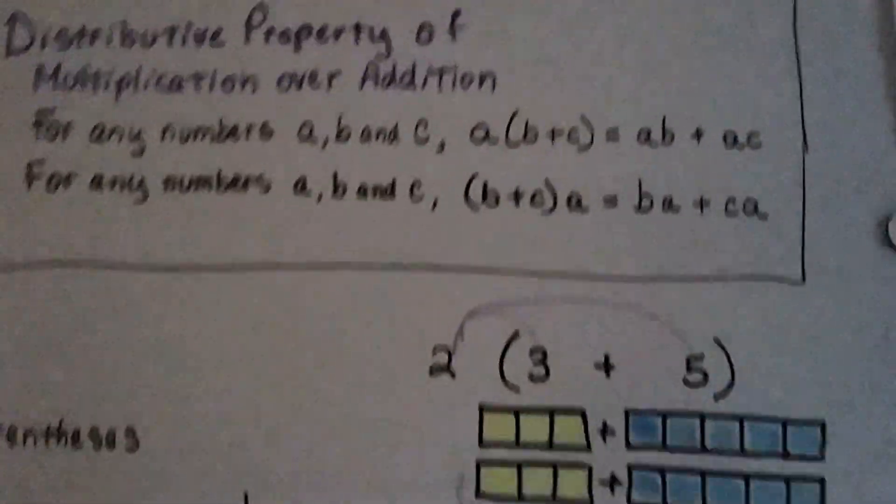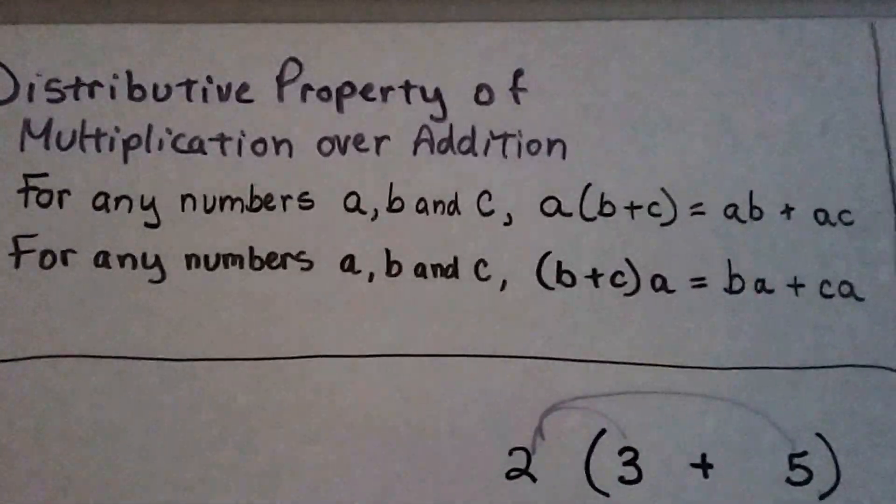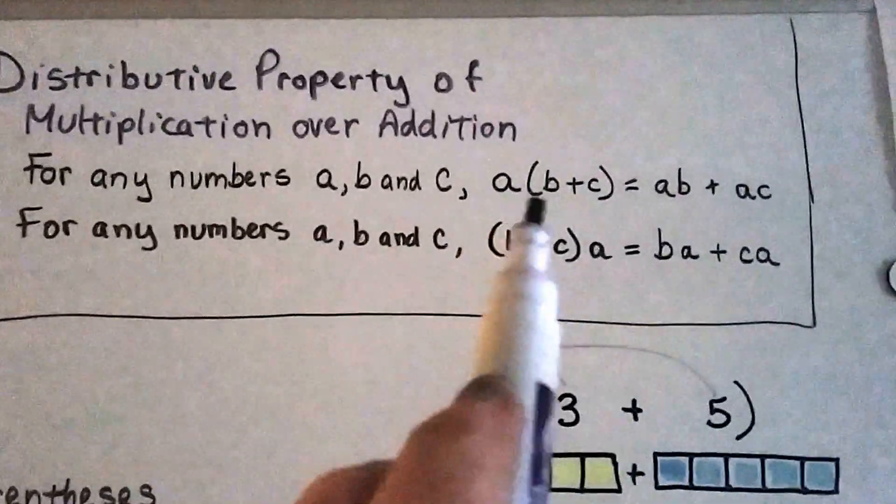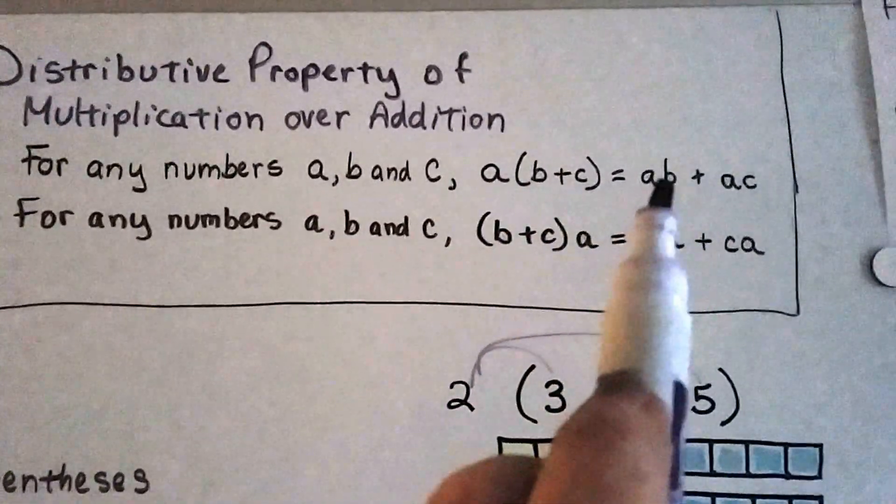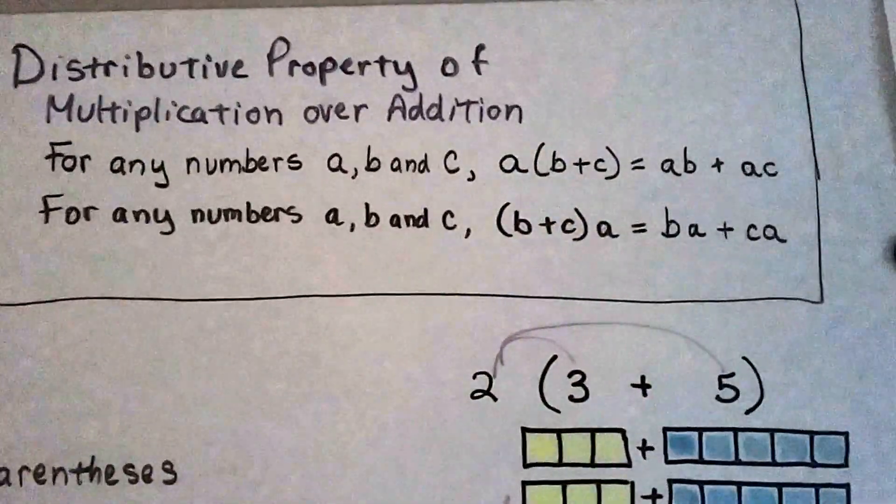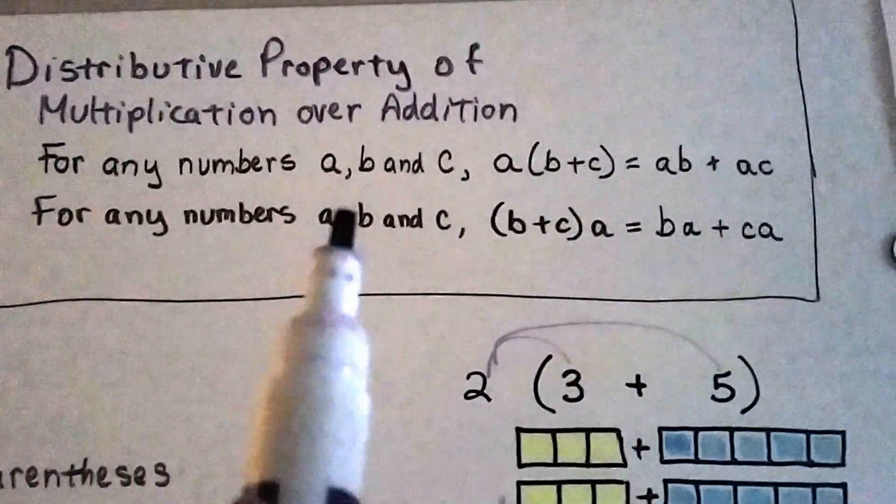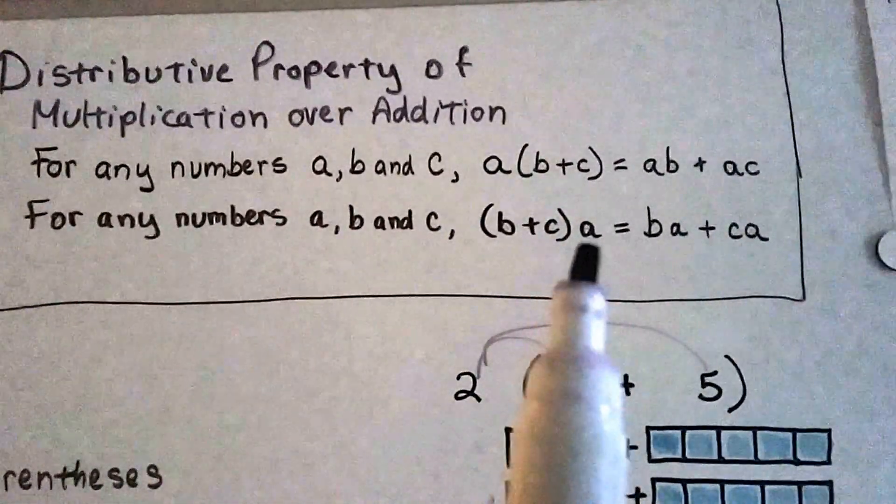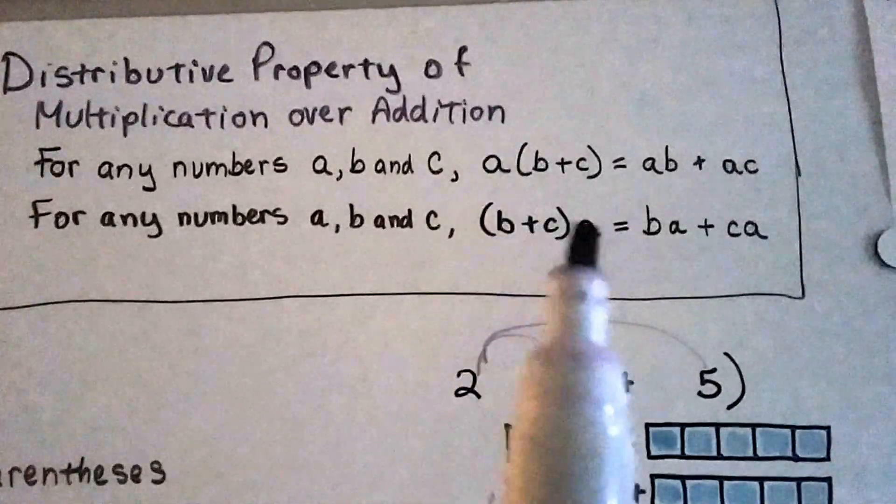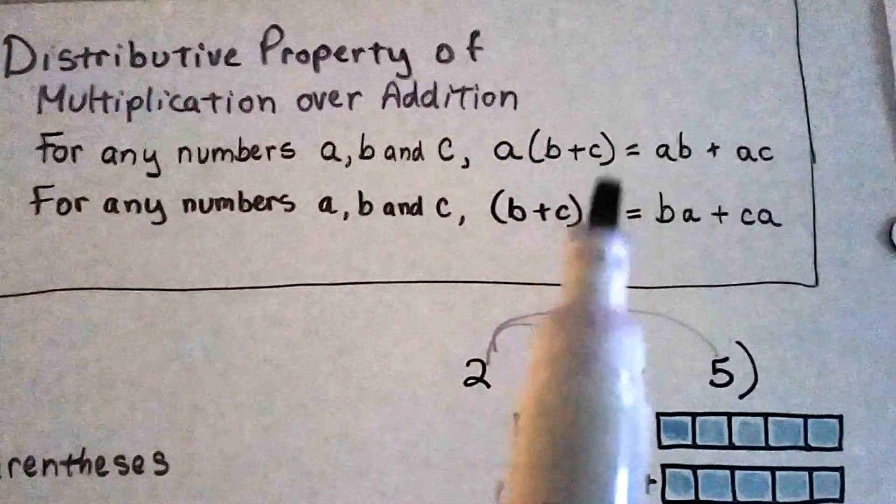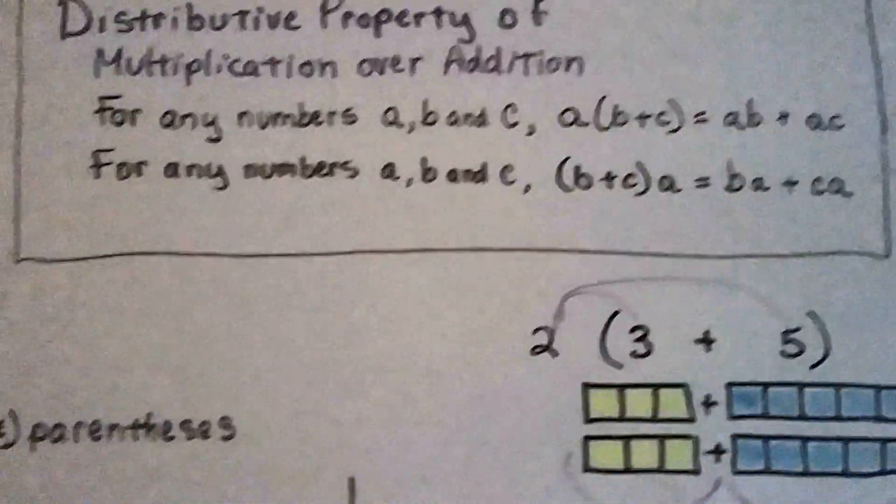So remember, the distributive property of multiplication over addition says for any numbers a, b, and c, a can be multiplied by (b+c) and be a·b plus a·c, because we're going to distribute it. And for any numbers a, b, and c, if it's in the back, if it's going to be distributed by being in back, see how it's in front here and in back here, we go b·a plus c·a.